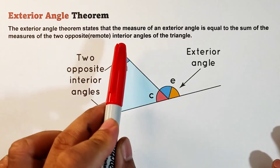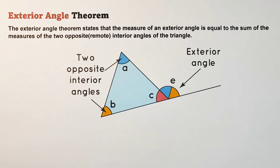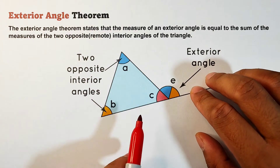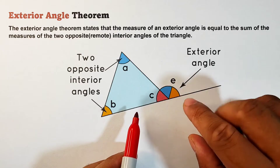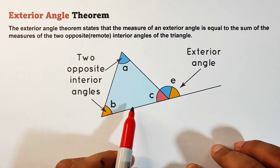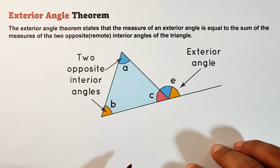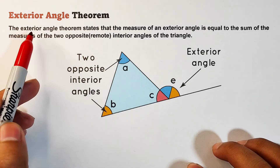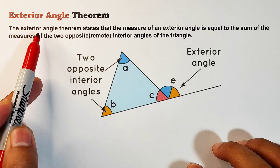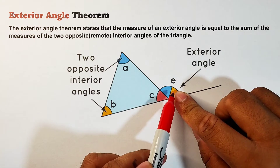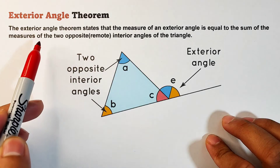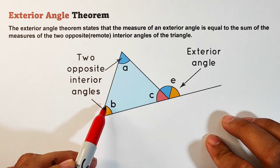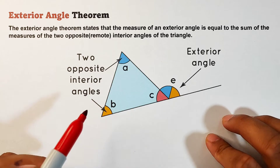What we have here is a given illustration of a triangle with an exterior angle. As you can see, angle E is your exterior angle, while A, B, and C are the interior angles of the given triangle. The exterior angle theorem states that the measurement of this exterior angle E is equal to the sum of the two remote interior angles.